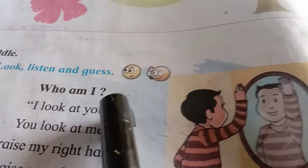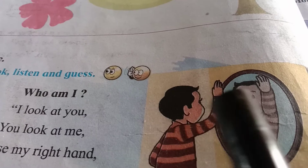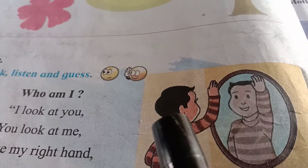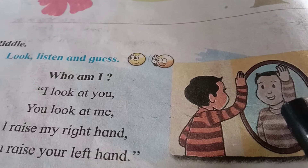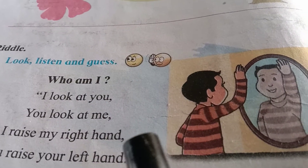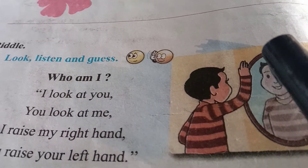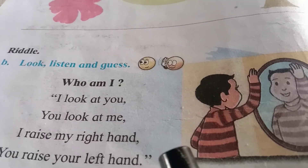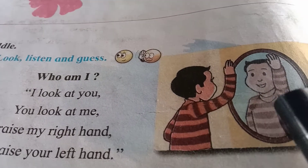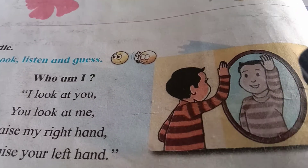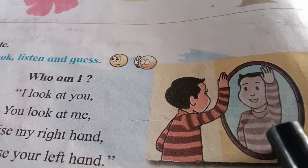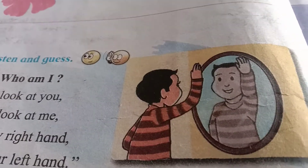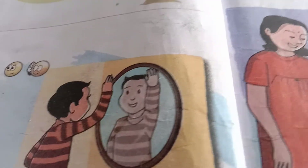Who am I? मी कोण आहे? I look at you - मी तुम्हाला पाहू शकतो. You look at me - तुम्ही मला पाहता. I raise my right hand - मी माझा उजवा हात वर करतो. You raise your left hand - तू तुझा डावा हात वर करतोस. मांचे हे कोण आहे? आरसा! आरसाला English मध्ये काय म्हणतात? Mirror. बरोबर.